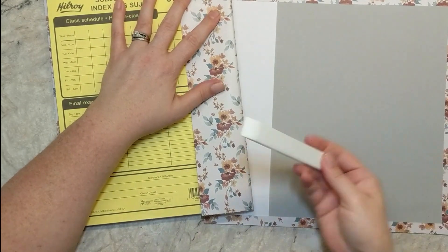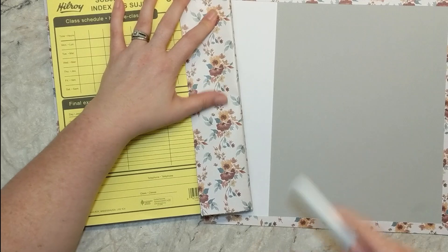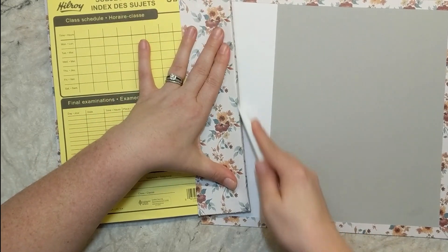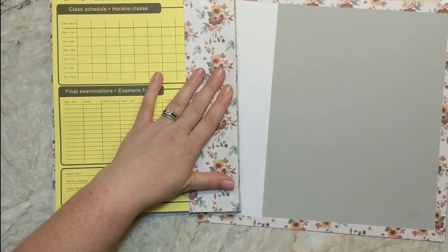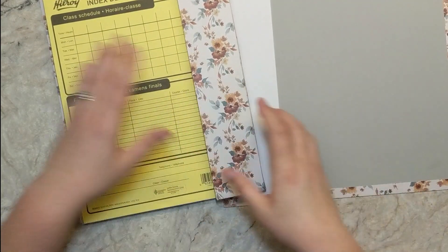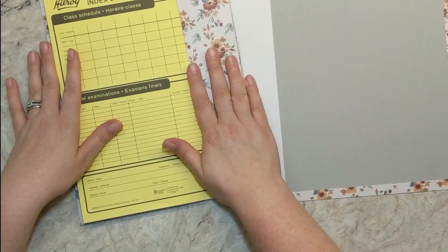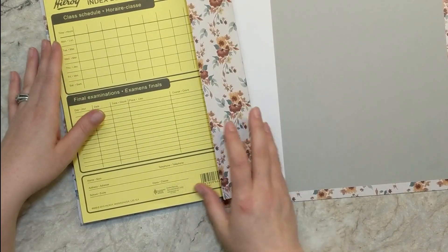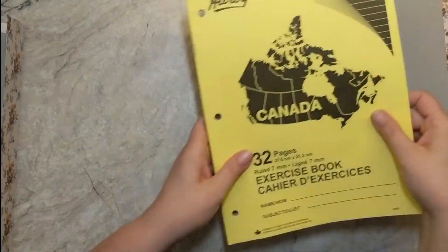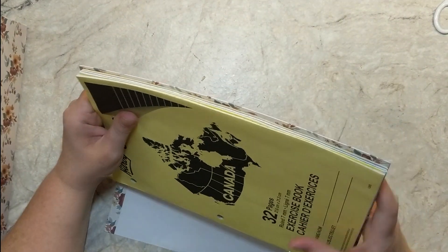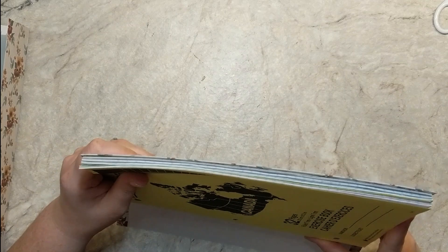I'll use my bone folder to help create those sort of 90 degree angles in there and I'll press it in really good. And then I'm going to repeat this to the back part of the cardstock doing the exact same thing, taking my little notebook and lining it up making sure that there's a little tiny edge hanging over on the cover. And then I will grab that spine and wrap it ever so gently around the book and then use the bone folder and press everything in.